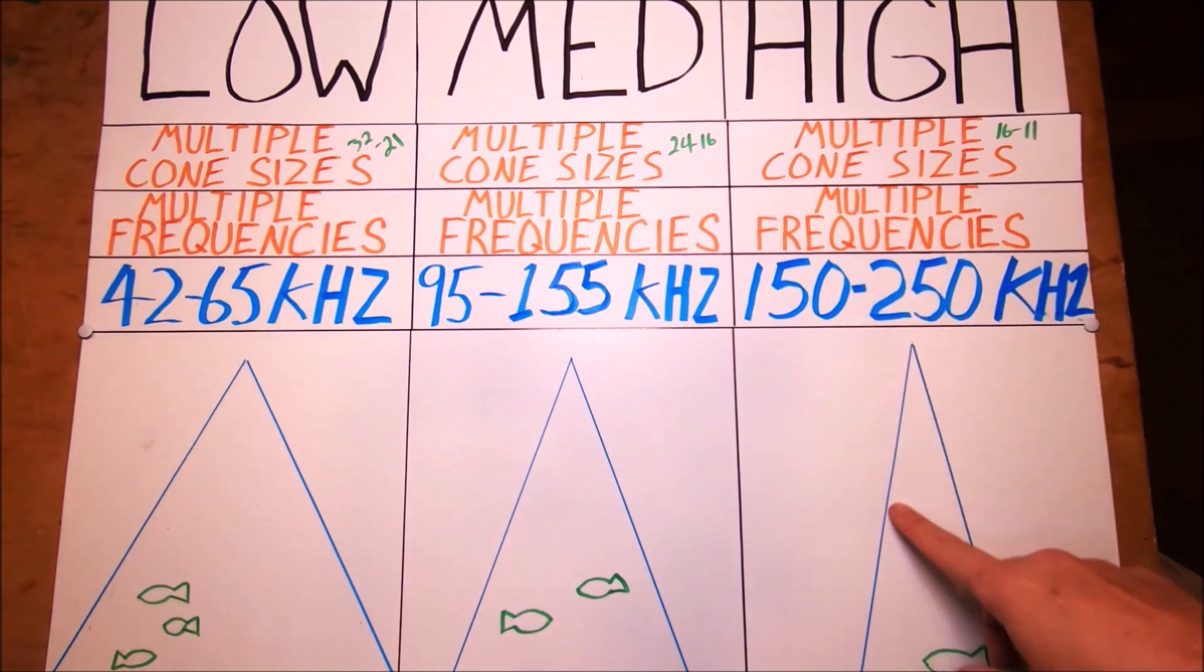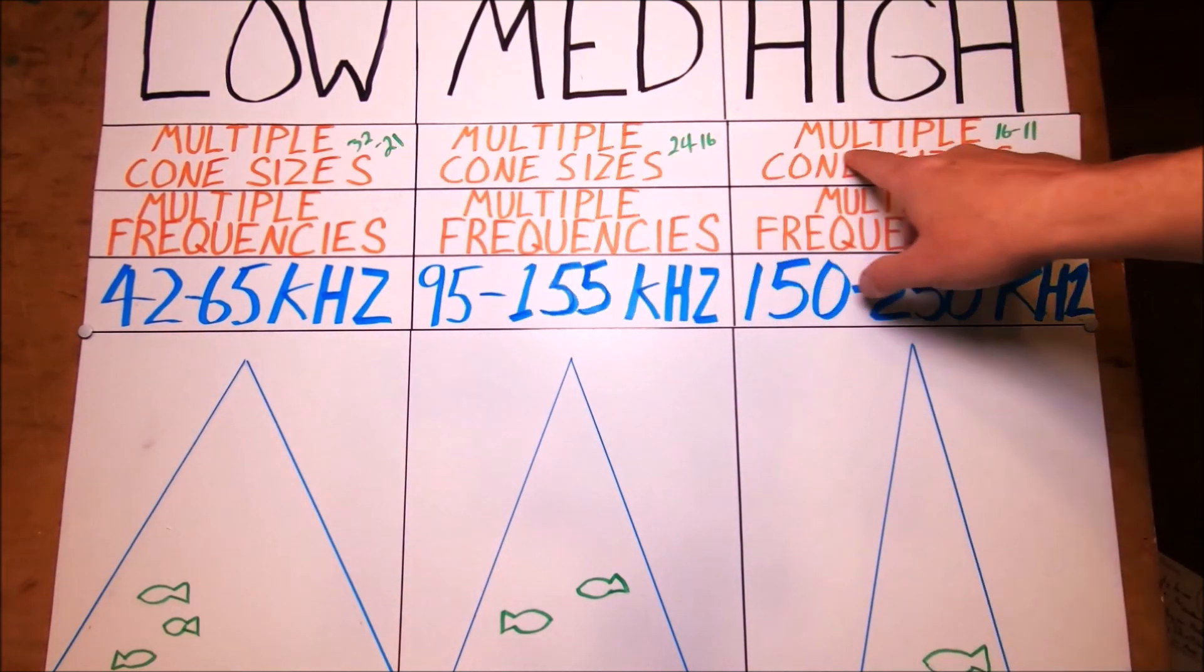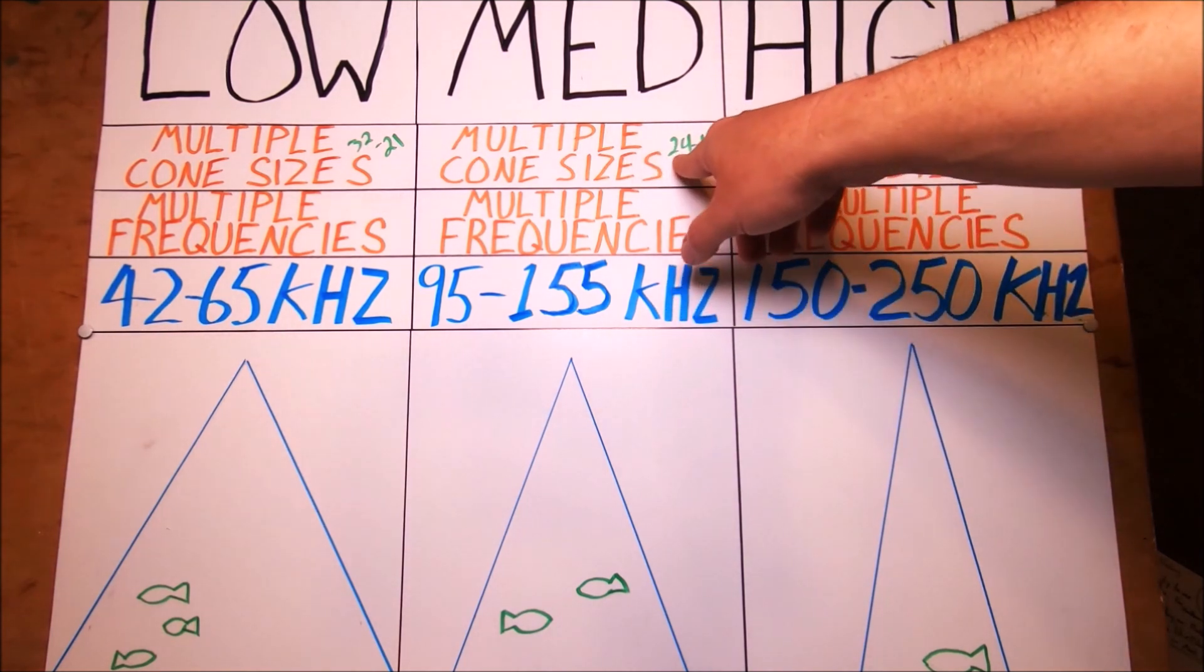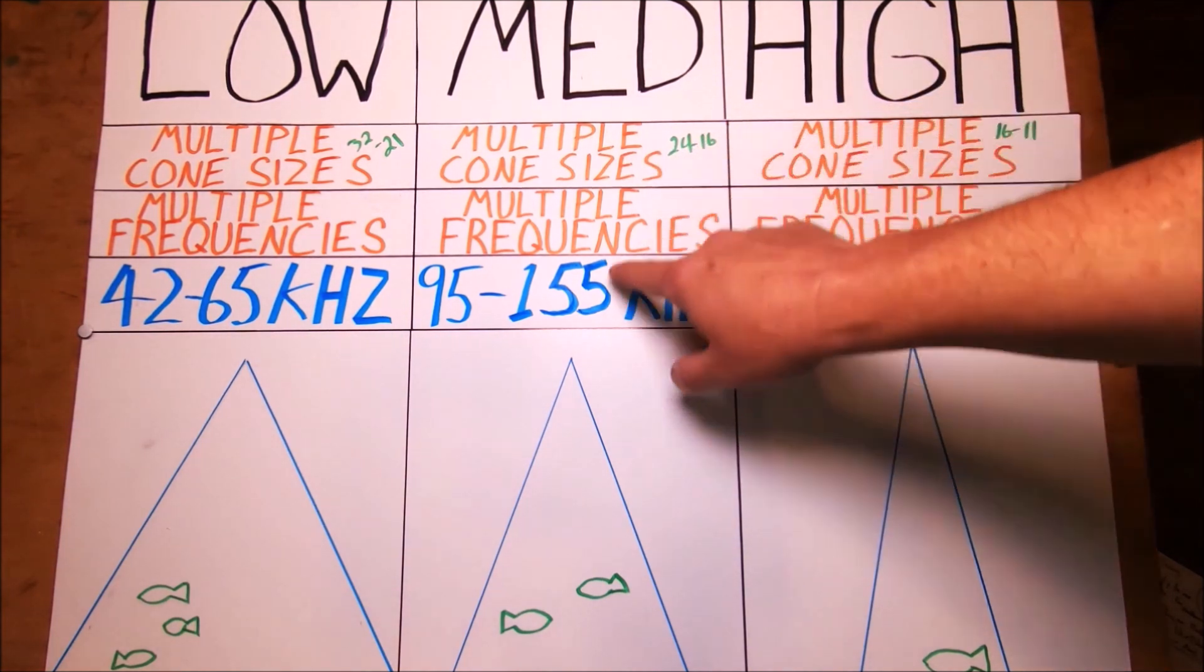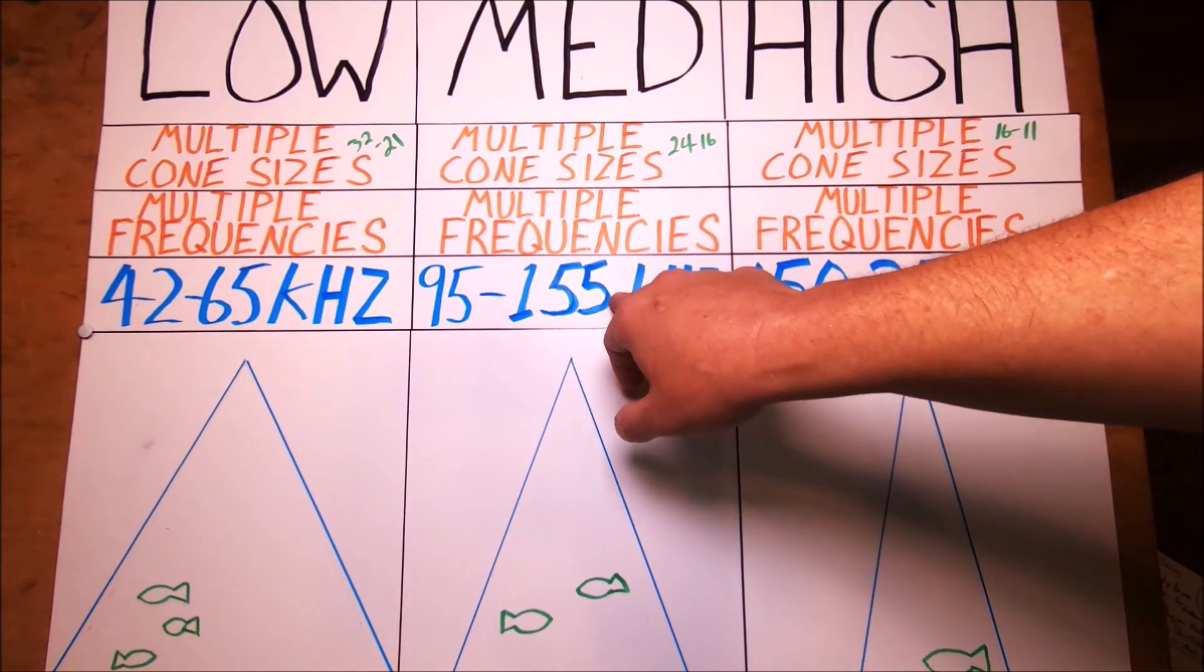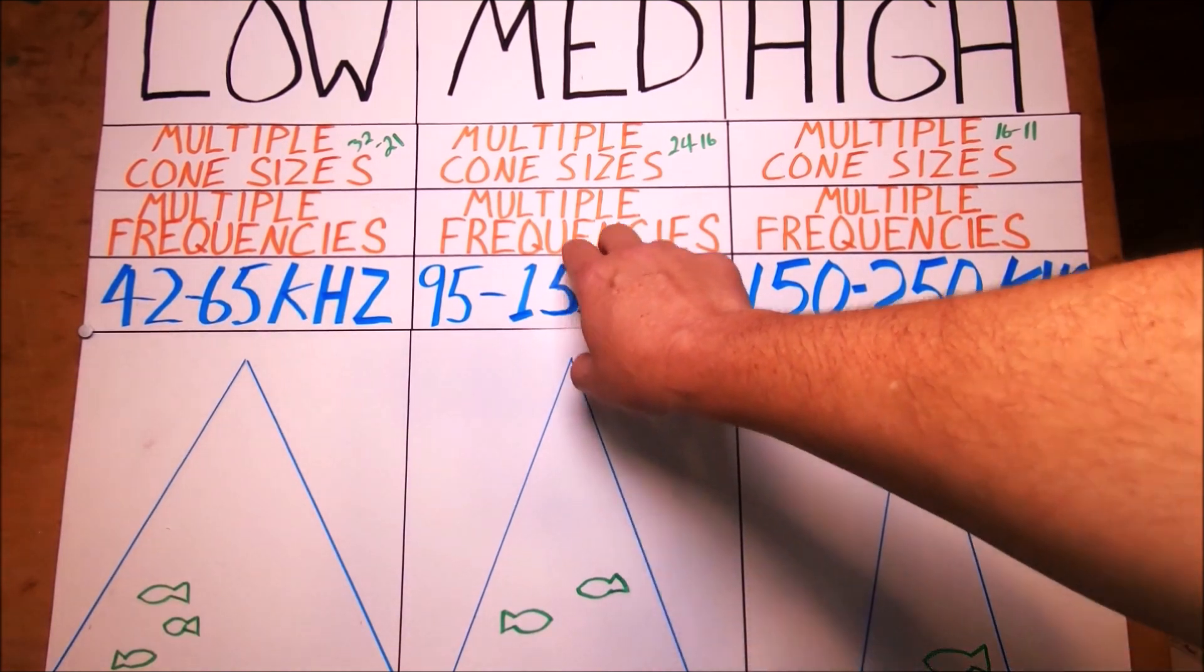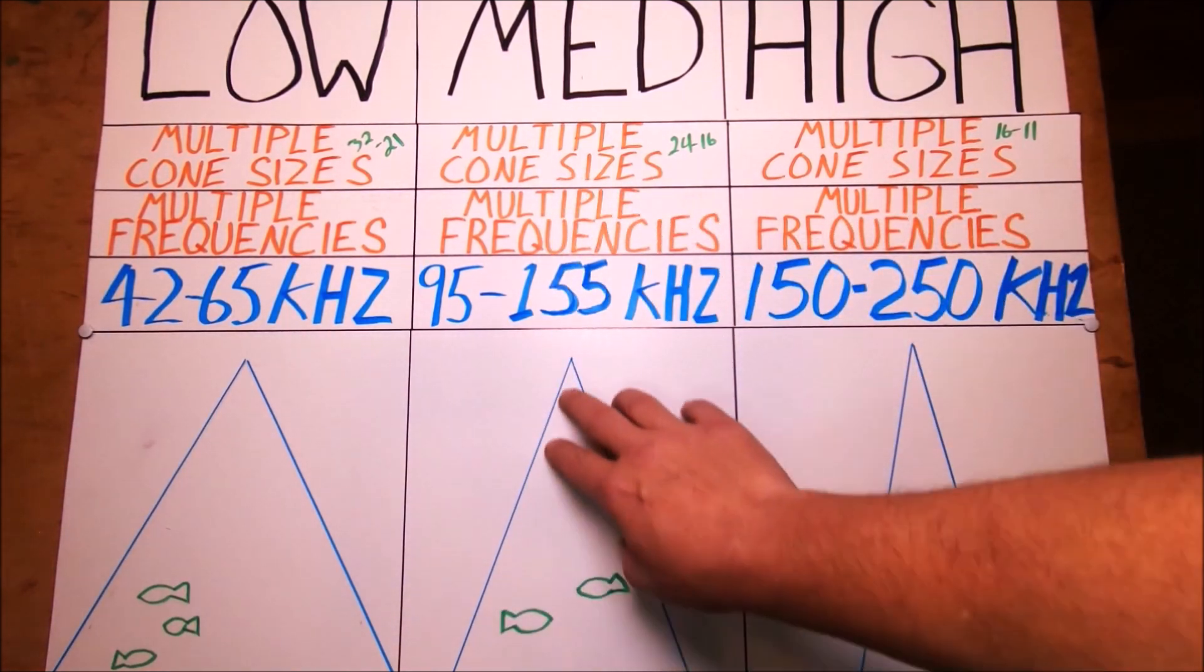Also, as it goes through the range, it also changes the cone size based on what's available in your transducer. So here in the medium, 24 to 16 degree cone sizes. As it's shifting through all these frequencies or sending all these frequency waves down and pulses or pings, it's shifting through all these different cone sizes.